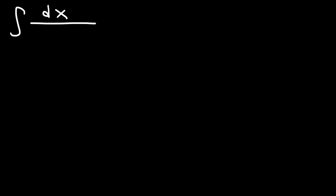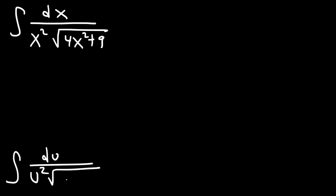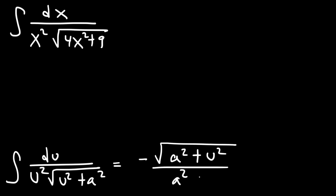Now let's work on another example. Find this indefinite integral. The formula we need is: the integral of du divided by u squared times the square root of u squared plus a squared, which equals negative square root of a squared plus u squared, divided by a squared u, plus c.